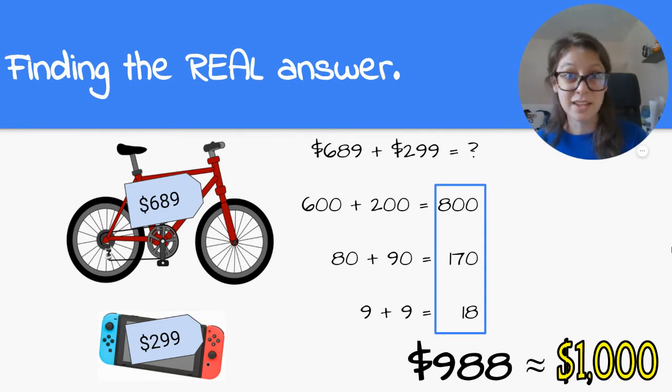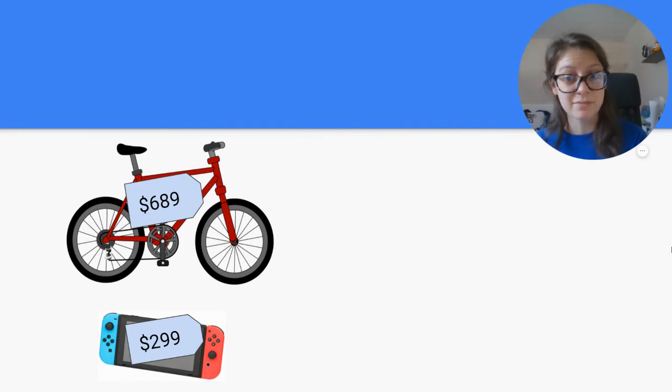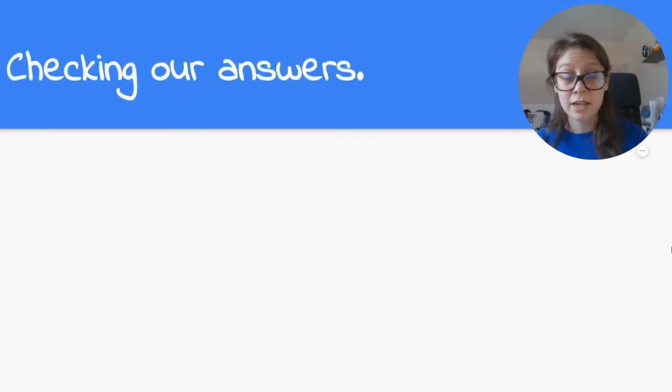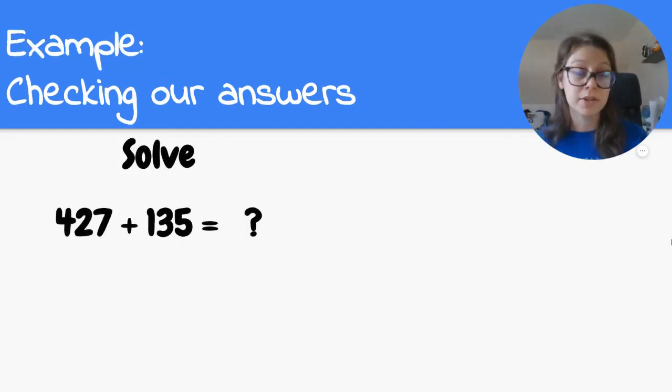Now, how does this help us in the classroom? Well, we don't always have a bike and we don't always have a Nintendo Switch, but we do have numbers. And so when we're solving problems, we can use reasonable estimates to help us check our answers. So if we were doing this in class, and like you will be doing in your lesson after this video, let's say we are solving 427 plus 135 equals something.